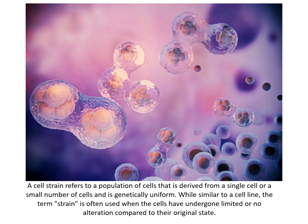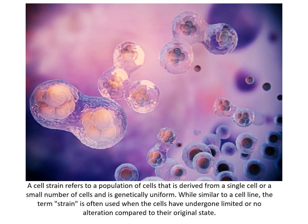Now, what is a cell line? A cell line is a population of cells descended from a single cell, but after being placed into an in vitro system, there are some artificial modifications that allow them to sustain a much longer lifespan than the cell strain or primary cell culture. Unlike primary cells, cell lines are often immortalized — meaning they can divide and proliferate indefinitely under laboratory conditions.